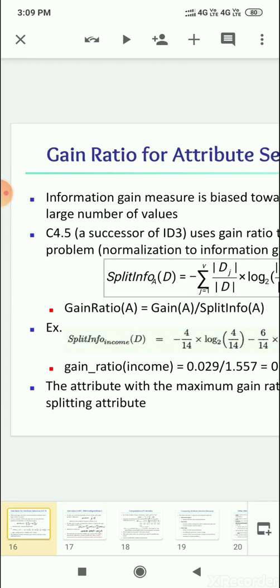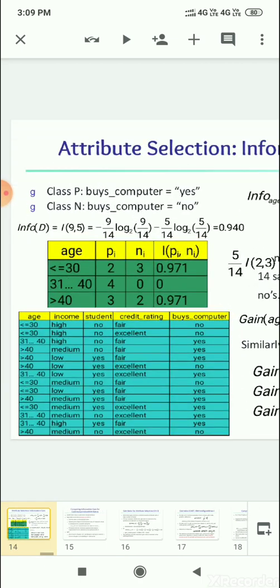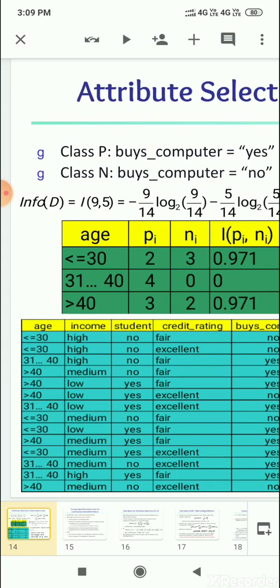For that we look at the table here. Here we are doing for income. In this table, income, you can see that three types of attributes are there: high, medium, and low. And you have to count how many high is there, how many medium is there, how many low is there. Then you look how many high is there: 1, 2, 3, 4. How many low is there: 1, 2, 3, 4. Then how many medium is there: 1, 2, 3, 4, 5, 6.